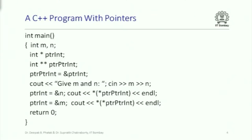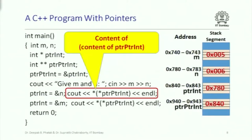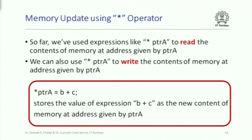In the video lectures, we have explained in great detail what exactly happens as each statement is executed. We will skip this because it is completely straightforward. There is a pointer to int which at one point takes the value of n, another time takes the value of m, and pointer-to-pointer-to-int always points to the pointer-to-int. So the values of N and M are printed out.